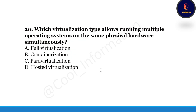Last question of this series: Which virtualization type allows running multiple operating systems on the same physical hardware simultaneously? Option A: full virtualization, Option B: containerization, Option C: para-virtualization, Option D: hosted virtualization. The correct option is Option A, full virtualization.